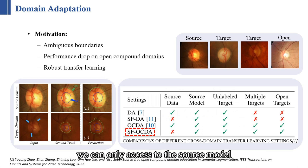But there is always a performance drop in open compound domains. Additionally, some previous works have shown that the robust pre-trained model has good generalization ability on out-of-distribution data.